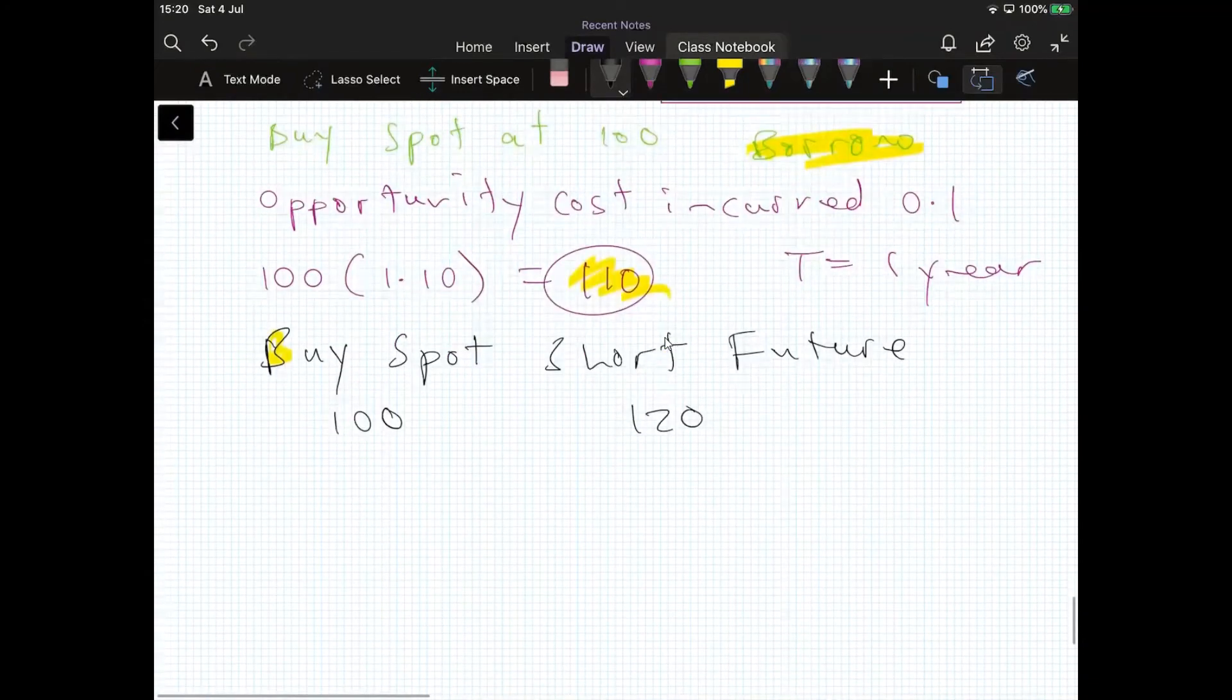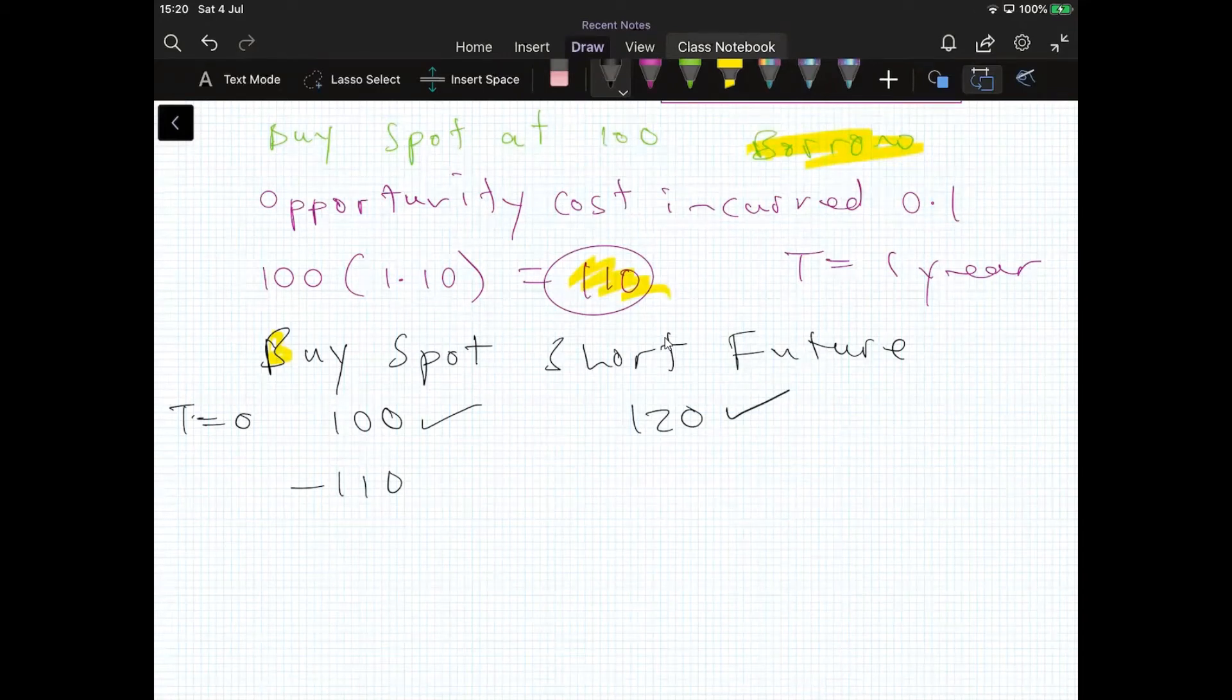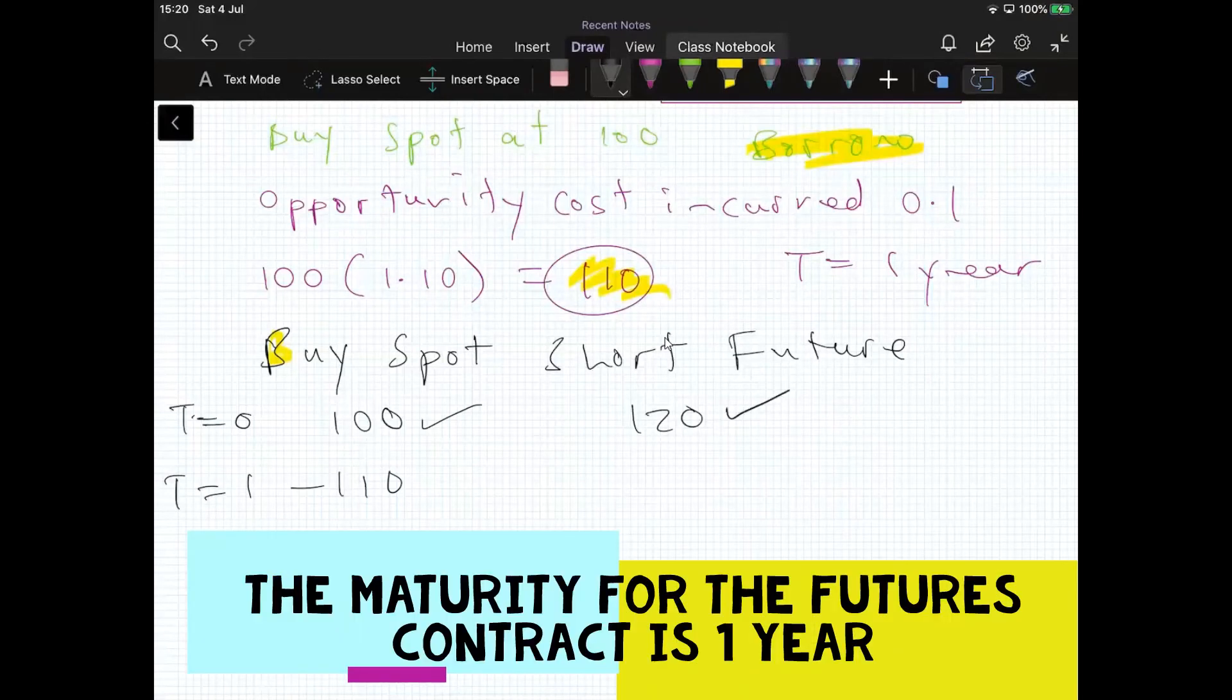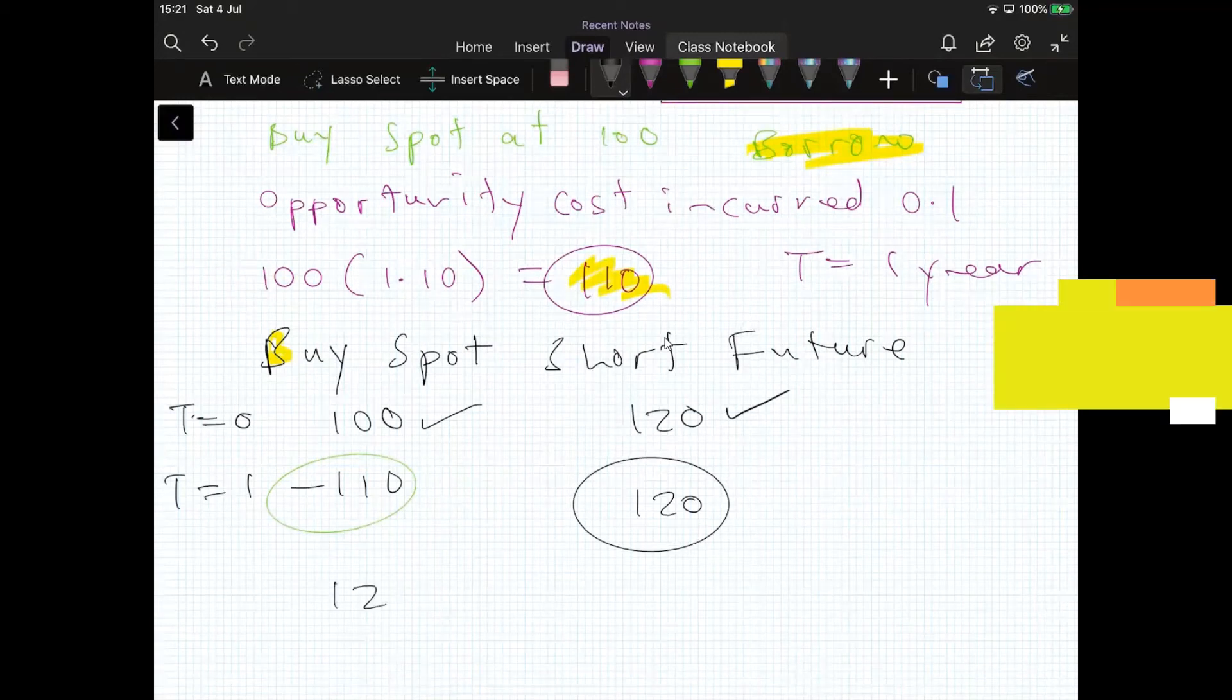If we shorted the futures at $120 and bought the spot for $100, and then had a repayment of $110 at the end of the year. At T equal to zero, we purchased at $100 and we went short the futures at $120. We borrowed the funds to purchase the spot. At T equal to one, that would create a repayment to the bank of $110. And from the proceeds of selling the bond which we had purchased, fixed at $120 in the futures contract, we would get $120. So $120 minus $110 would leave us with $10 profit.